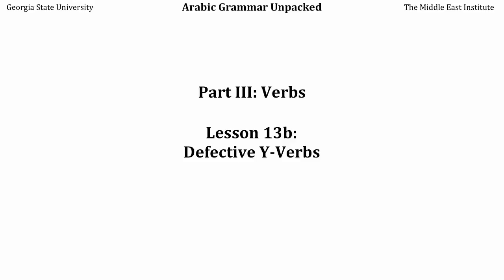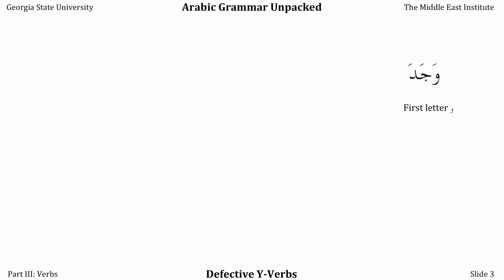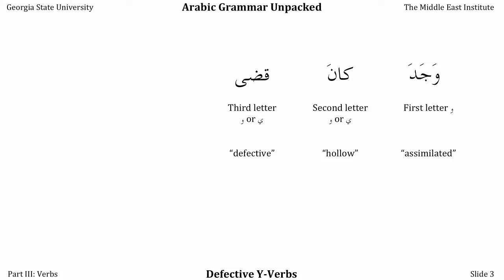As we know, there are five different types of irregular verbs in Arabic. The first type, the assimilated verbs, use WAU as their first letter. The second type, hollow verbs, use WAU or YA as their middle letter. The third type, defective verbs, use WAU or YA as their final letter. The fourth type, doubled verbs, have the same last two letters. And the final type, hamzated verbs, use HAMZA as their first letter.